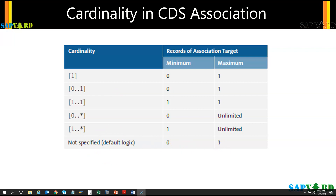Cardinality is mainly used to document the semantics of the data model. It is not validated at runtime, but if used wrongly it can produce syntax check warnings. SAP says that specifying the cardinality after the keyword 'association' is optional. If not explicitly defined, the cardinality of zero to one is implicitly used by SAP internally.